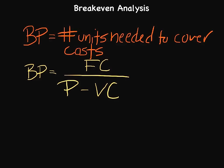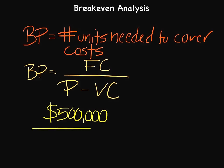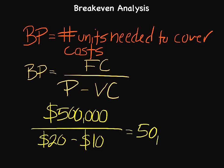Let's say we produce cell phone cases. We have fixed costs of $500,000 — costs we incur without any production whatsoever, covering plants, property, equipment, advertising, and taxes. We sell these cases for $20 each, and it costs us $10 in variable costs to make each one. So for every case we sell for $20, we pay $10 to have it made. With this equation, we would have a break-even point of 50,000 units.